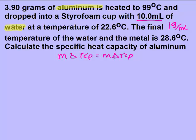Make sure that you're keeping track of your substances — we have aluminum and we have water. You do not need to rearrange your equations before solving them. Just make sure that you're keeping your data separate. For aluminum's information, I need the mass, the change in temperature, and the Cp.